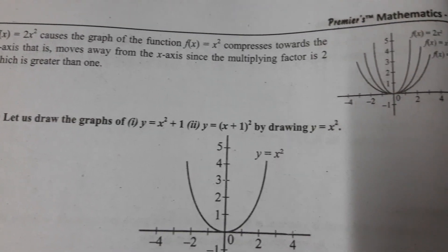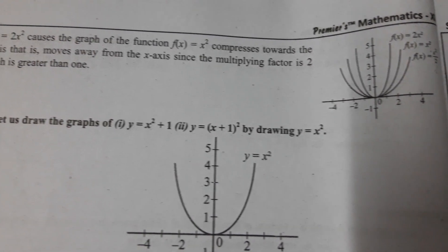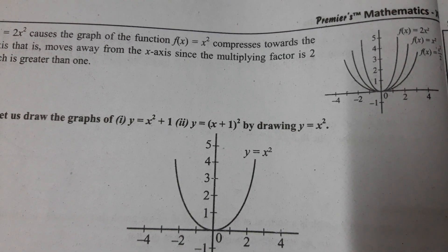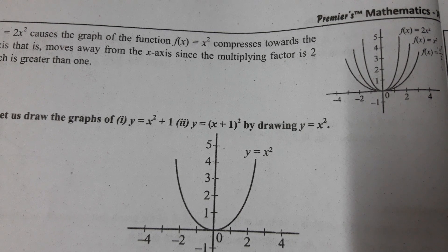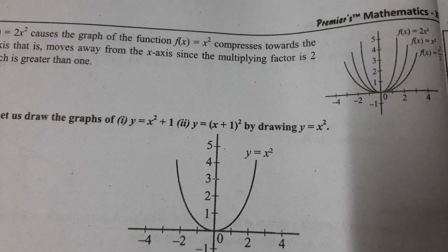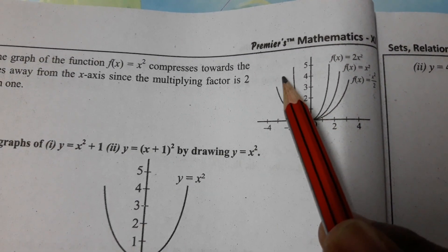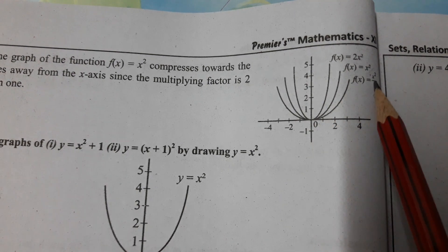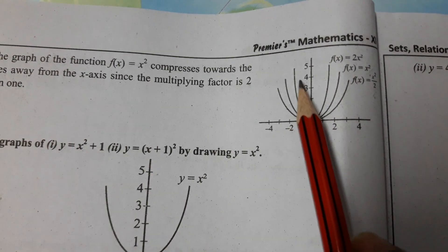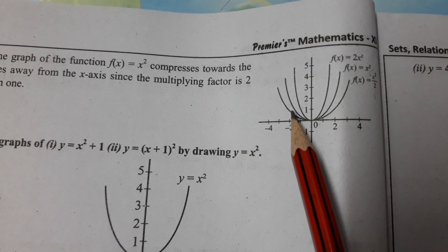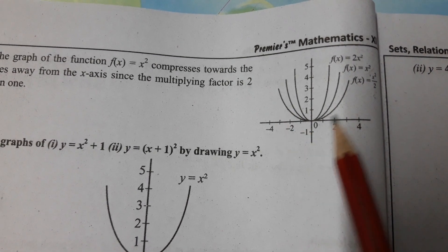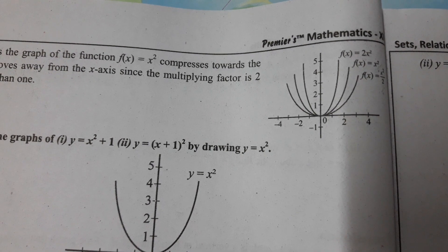f(x) = 2x² causes the graph of f(x) = x² to compress towards the y-axis — that is, it moves away from the x-axis — since the multiplying factor is 2 which is greater than 1. So: multiplying factor less than 1 → stretch; multiplying factor greater than 1 → compress. Multiply by 2 means compress; divide by 2 (multiply by ½) means stretch.